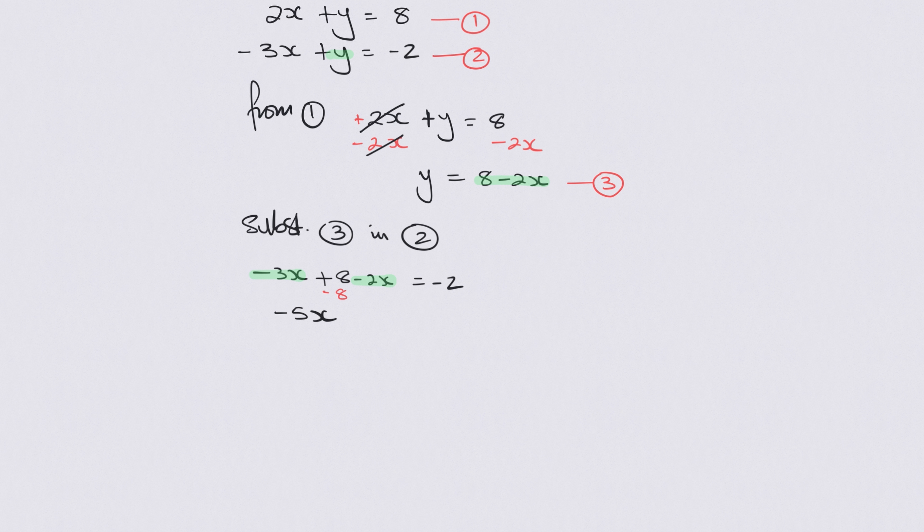we can take away this 8 from both sides, just get rid of it now I think, which means it's going to cancel out here and that's going to be minus 10 over there because negative 2 take away 8 is minus 10.